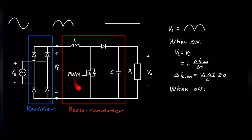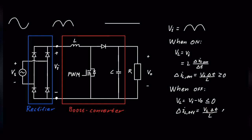When the MOSFET is off, the voltage over the inductor is equal to VI minus VO, so VL equals VI minus VO. Because this is a boost converter, VO is larger than VI, so VL is negative or equal to zero. The change of current when off equals VL times delta-t over L, and since VL is negative, this is less than zero — so the current is decreasing over time.